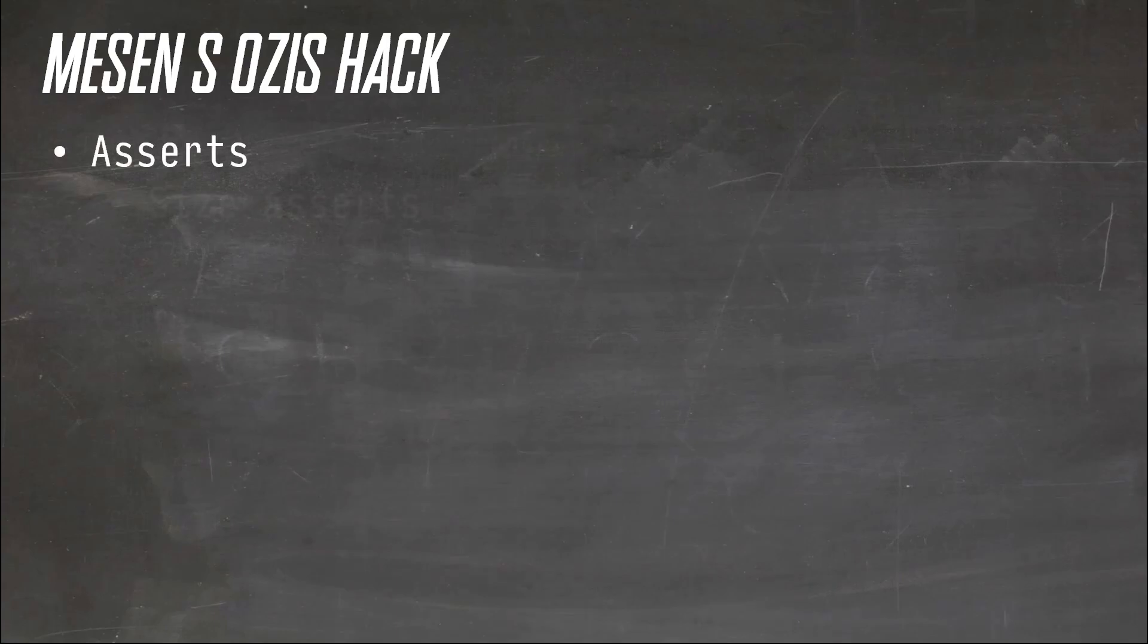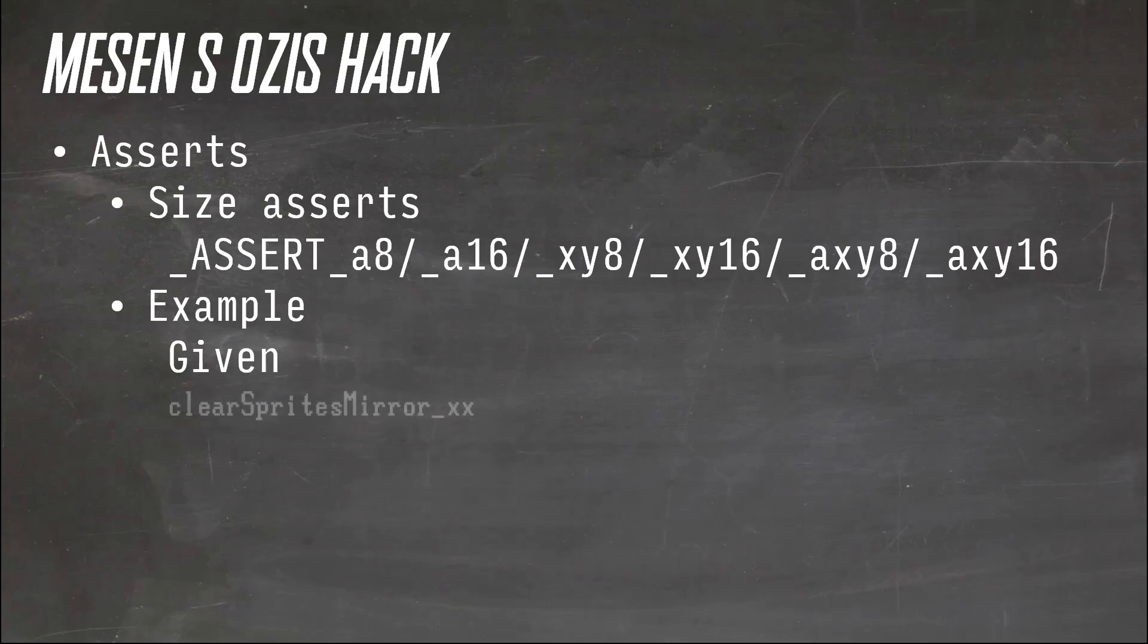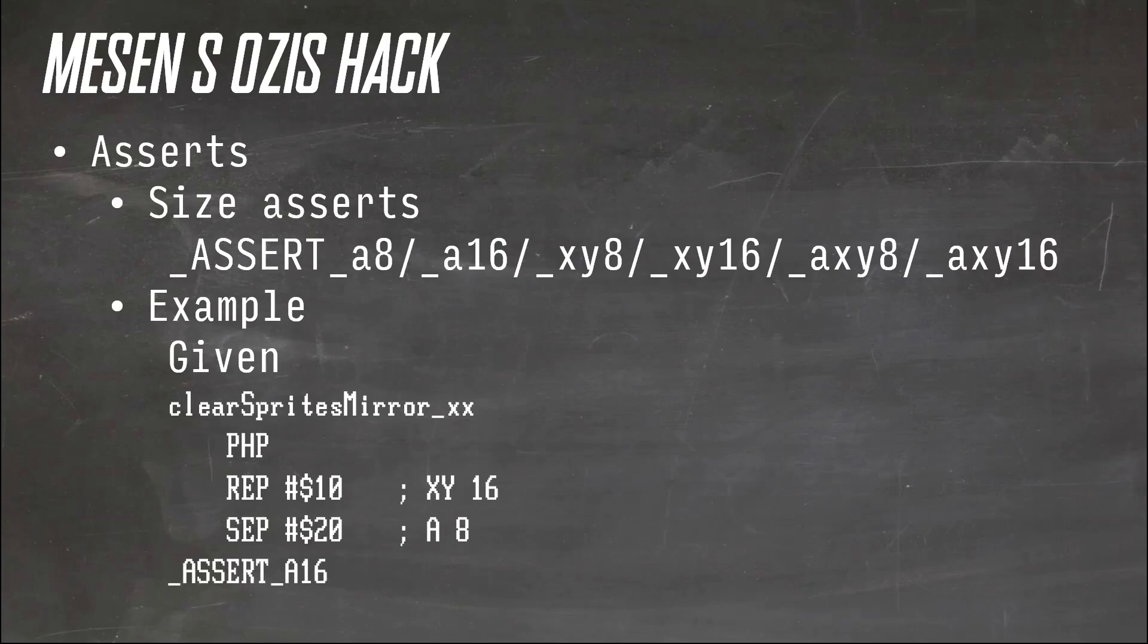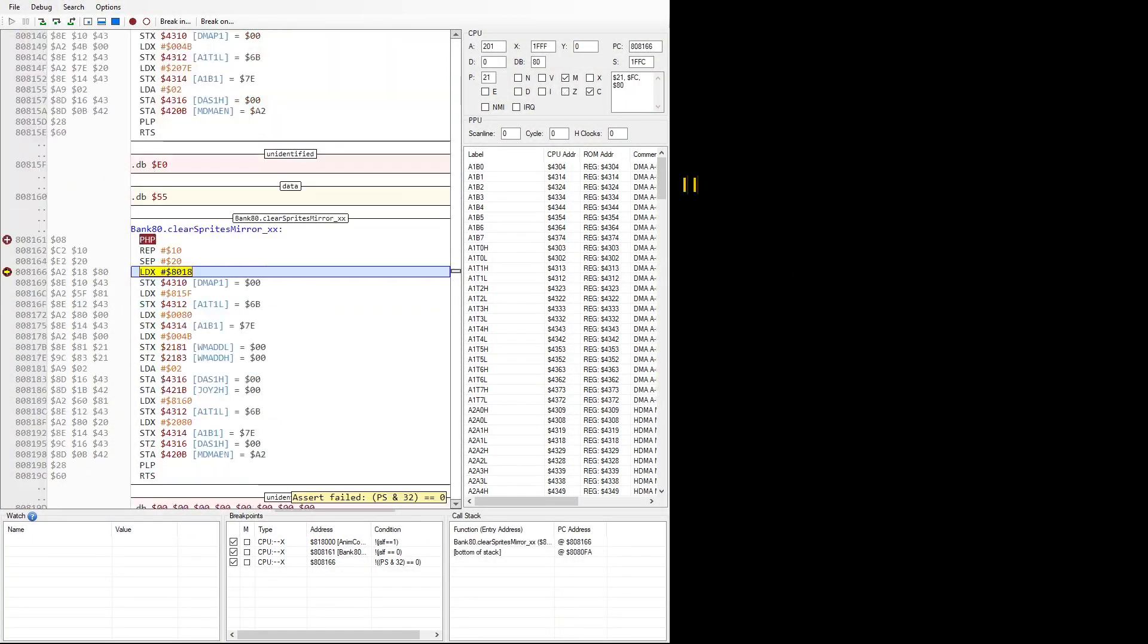Asserts. When you assume something, you assert it to be true. These days you make tests. Back then, we made asserts. I've added a few pre-builts for you. So these can be used to double check that the size of A and XY are what you think they are. And if they are not, the debugger will stop and tell you it failed. So, _assert_A8 makes sure that A is in fact 8 bits. For example, here is a case I've set up where it fails.